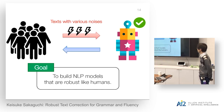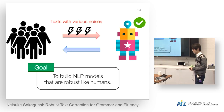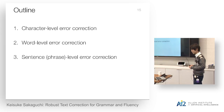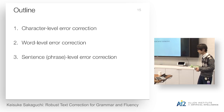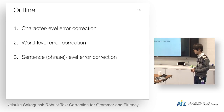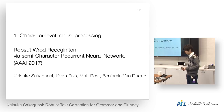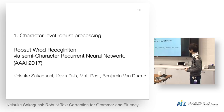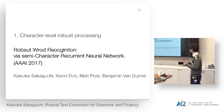Here is the outline of this talk. It's very simple. We start from character-level error correction, then move on to token-level error correction, and finally I'm going to talk about sentence or phrase-level error correction. The first part was originally presented at AAAI last year. If you have any questions and comments, feel free to interrupt me.